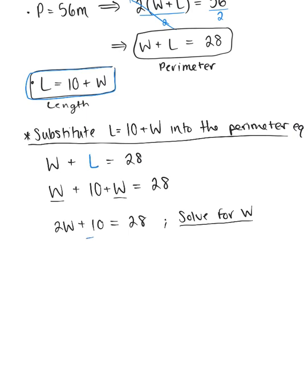To solve, I'll subtract 10 from both sides. 10 minus 10 equals 0, leaving 2W = 28 - 10, which gives us 2W = 18.